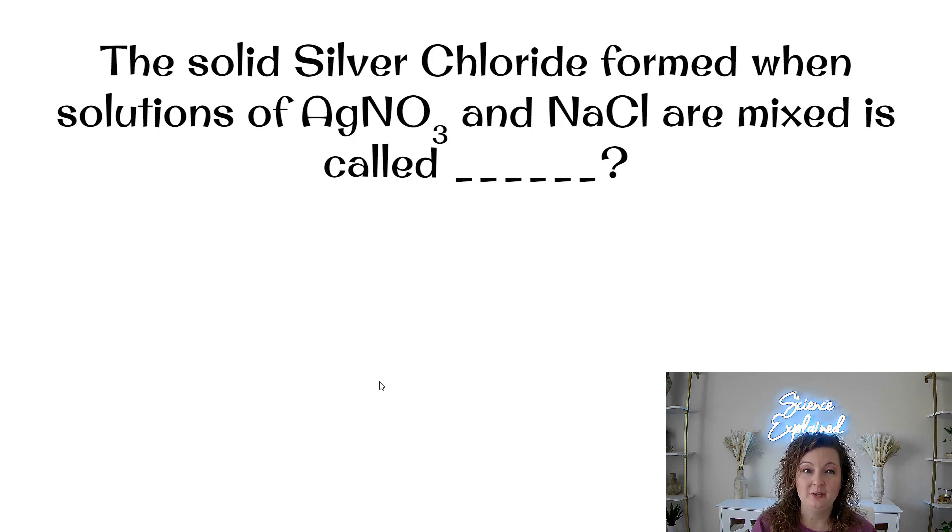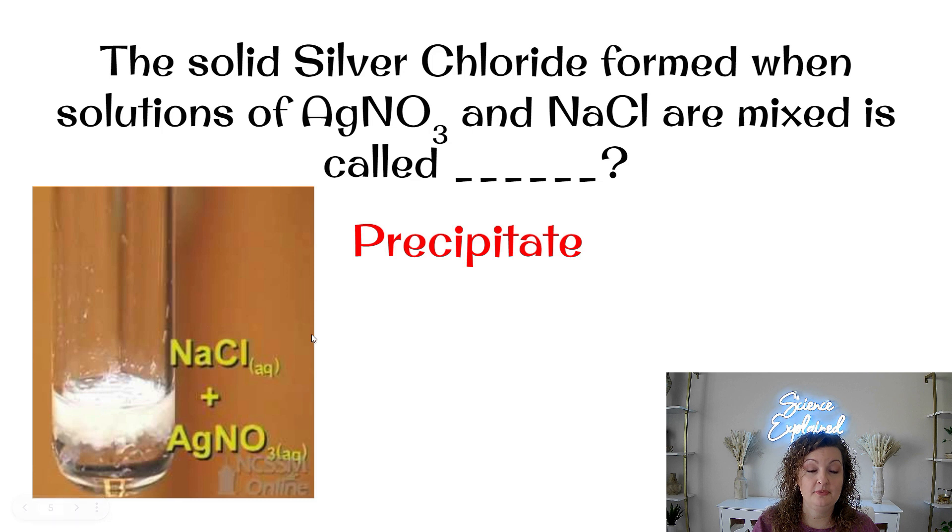Okay. The solid silver chloride formed when solutions of AgNO3 and NaCl are mixed is called what? And this really doesn't have too much to do with solubility rules as in what number rule it is. This is just a generalized question of chemical reactions. So what is it called when it forms a solid? It's a precipitant. And that is what is going to be important to you in a second. You can see these say AQ, AQ, and that AQ stands for aqueous solution. But the S that you're going to see is standing for the precipitant, the solid precipitant that is formed.